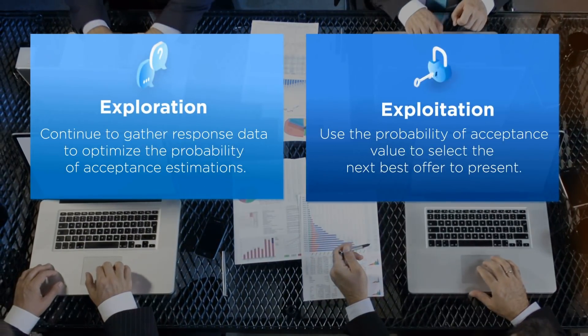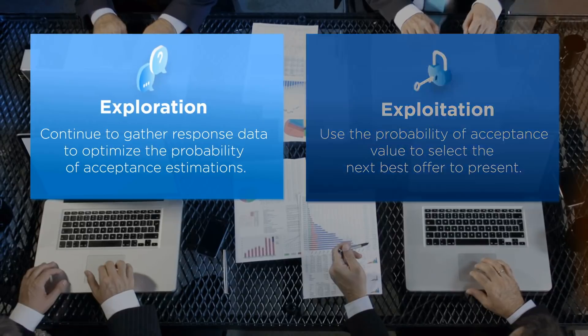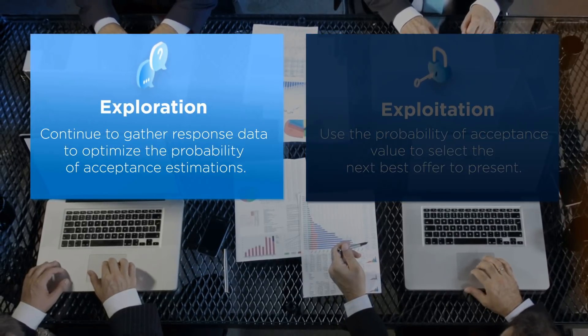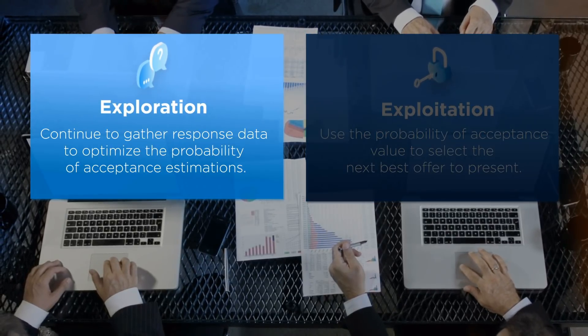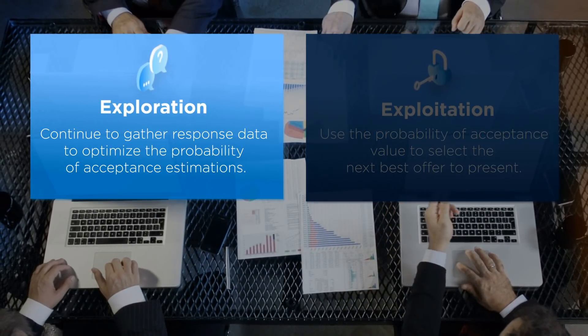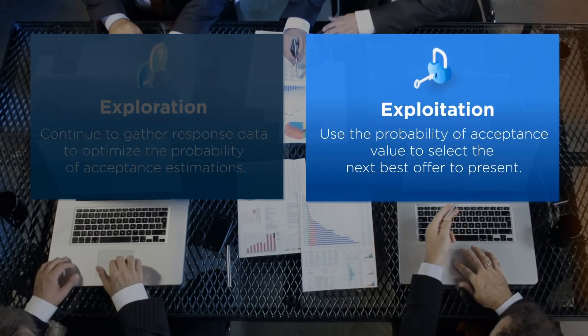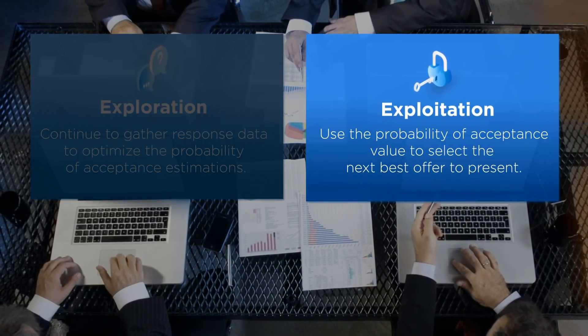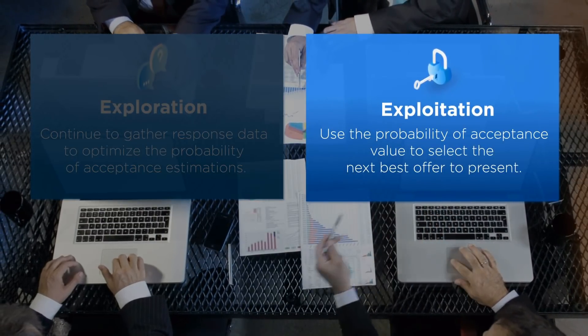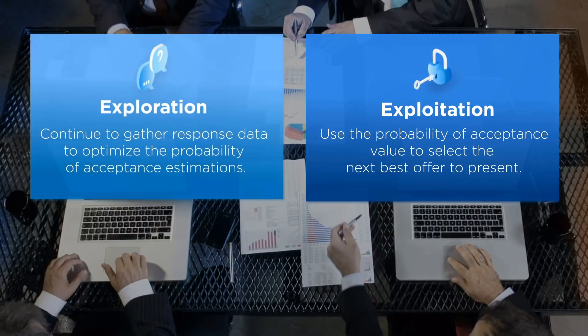Unica Interact Self-Learning has two learning modes: Exploration, where you gather response data to optimize the estimation, and Exploitation, where the learning module uses the probabilities to help select the offers to present.